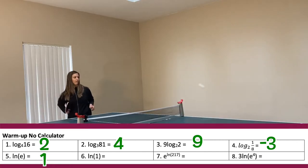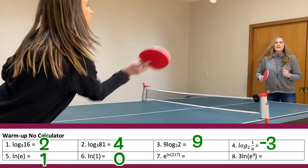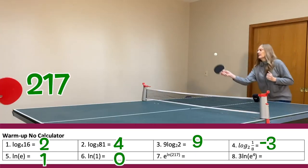Natural log of 1 is 0. E raised to natural log of 2.17 is 2.17.